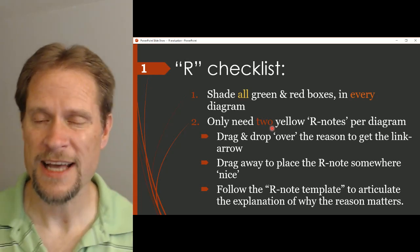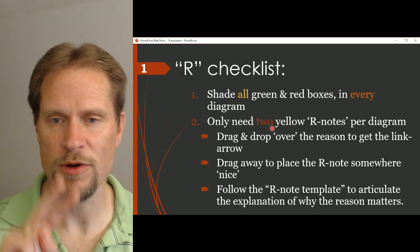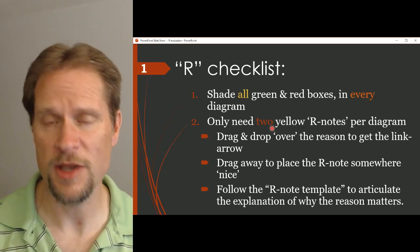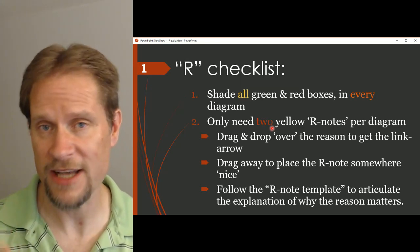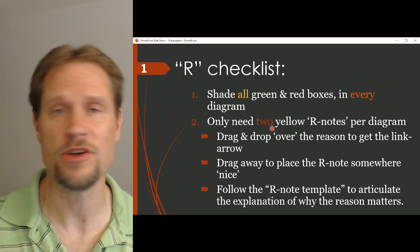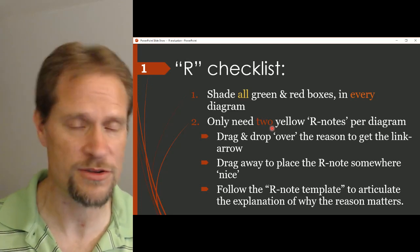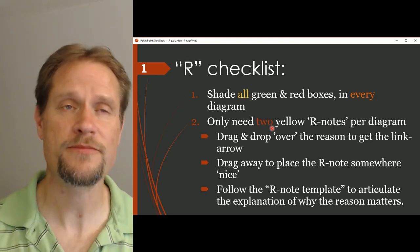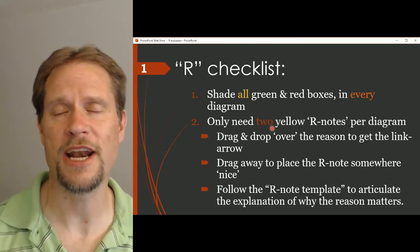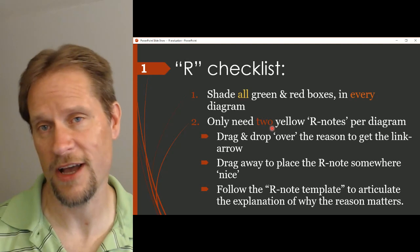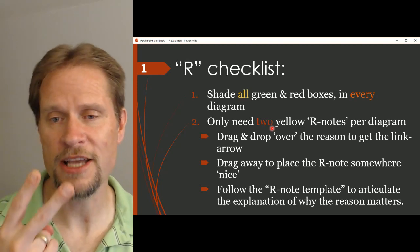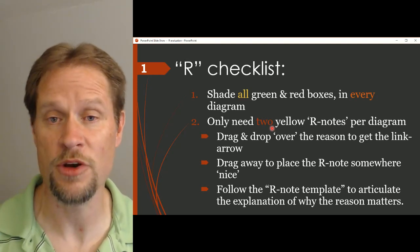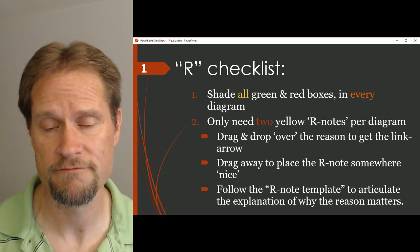To save you work and save me grading, I'm only going to ask you to provide two yellow R notes articulating two boxes' shadings — you only need to do two. In the listicle you have five green boxes; you have to shade all five, but I only want two yellow R notes, and you get to pick which of the five reasons get an R note. If you can do two well, that gives me confidence that you could do all five well — so I'm not going to bother asking for all five.